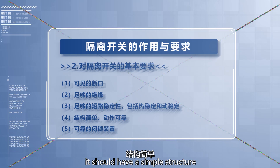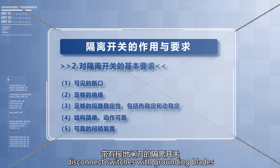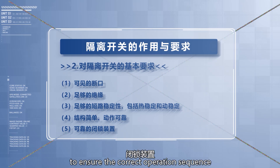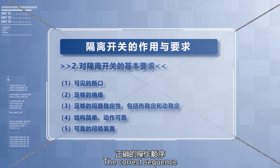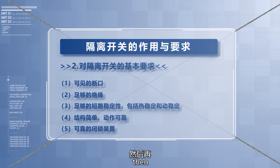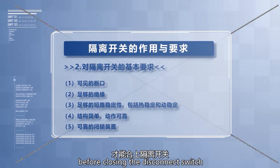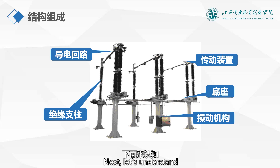Fourth, it should have a simple structure and reliable operation. Fifth, disconnect switches with grounding blades should have interlocking devices to ensure the correct operation sequence. The correct sequence must be to open the disconnect switch first, then close the grounding blade, or to open the grounding blade first before closing the disconnect switch.